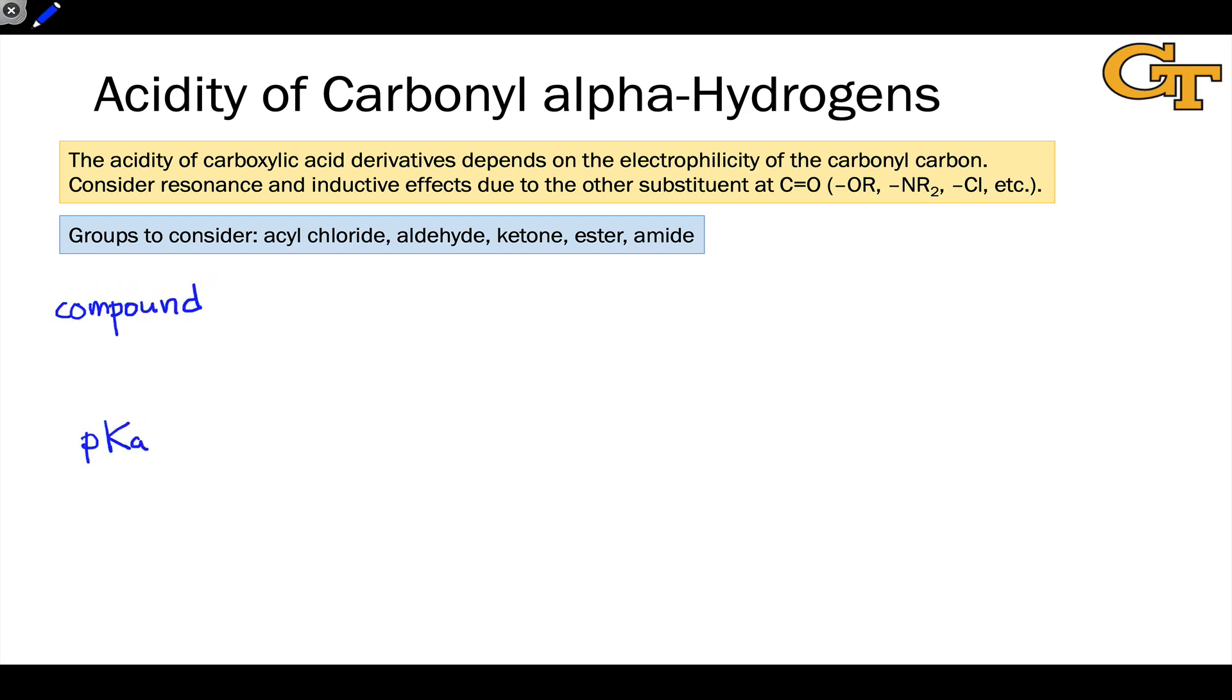Let's look now at the acidity at the alpha carbons of a series of carbonyl compounds with different substituents linked to the carbonyl group. So we'll look at acyl chlorides, aldehydes, ketones, esters, and amides.